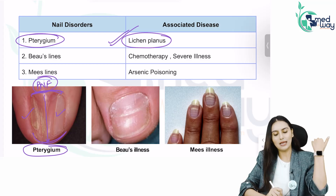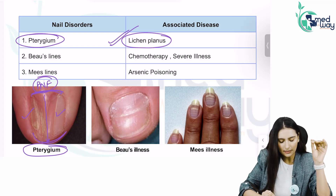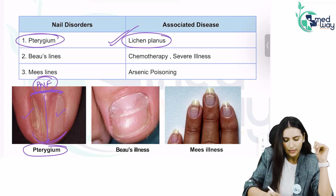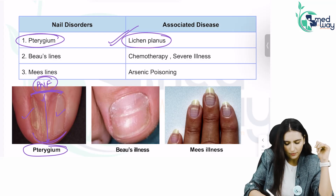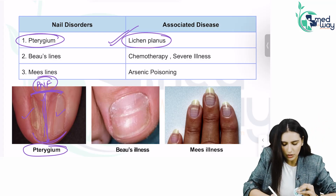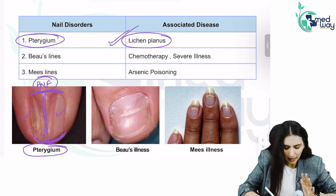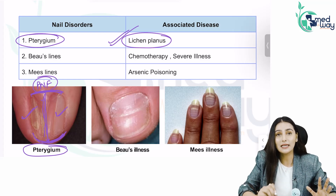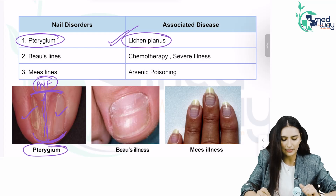So pterygium in lichen planus: the proximal nail fold starts growing and it merges to the distal part of the nail, splitting your nail into two parts. This is seen in lichen planus.